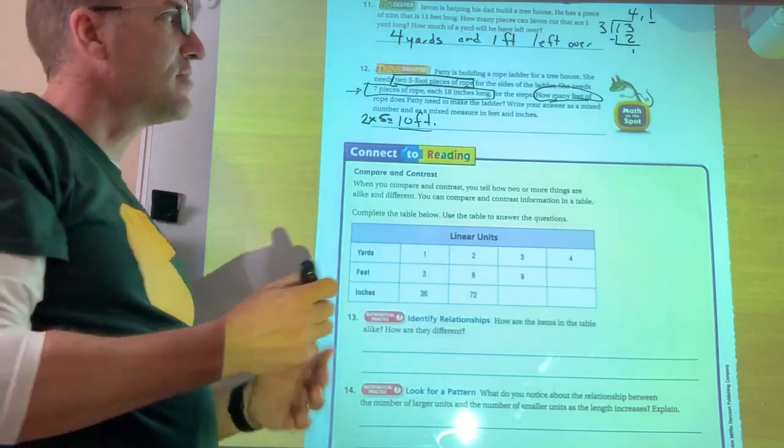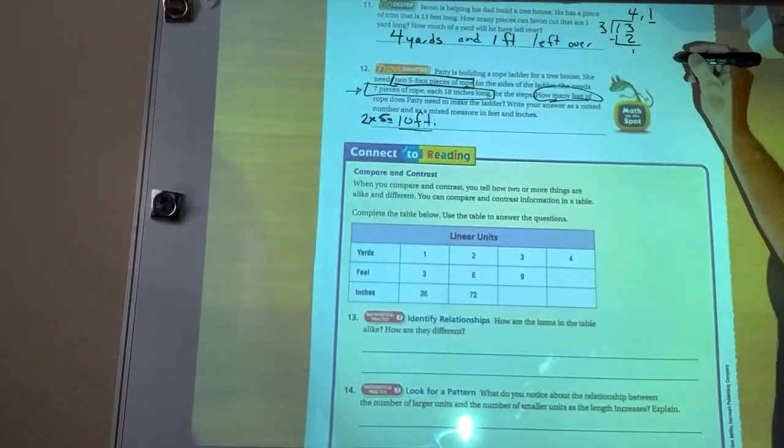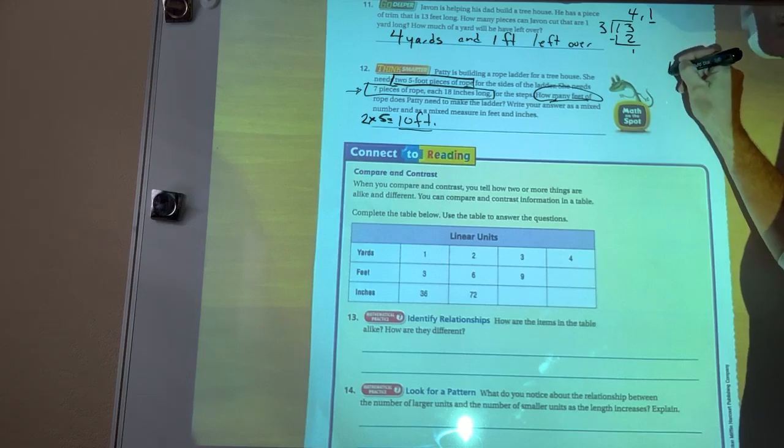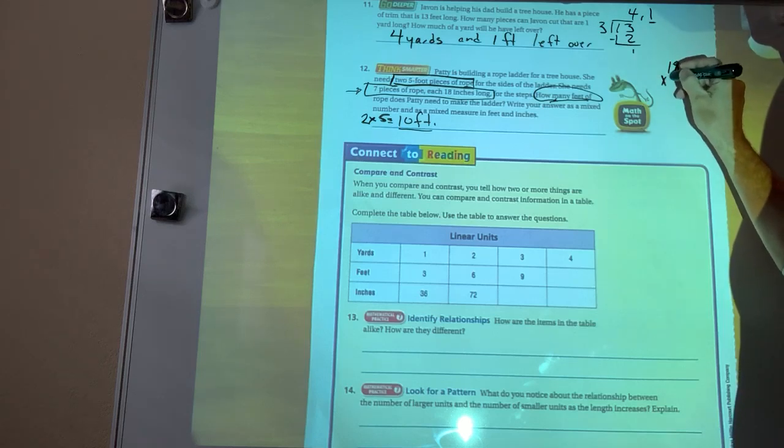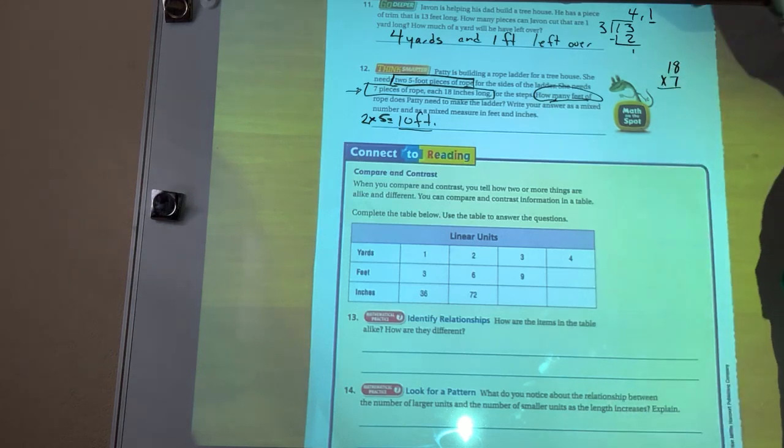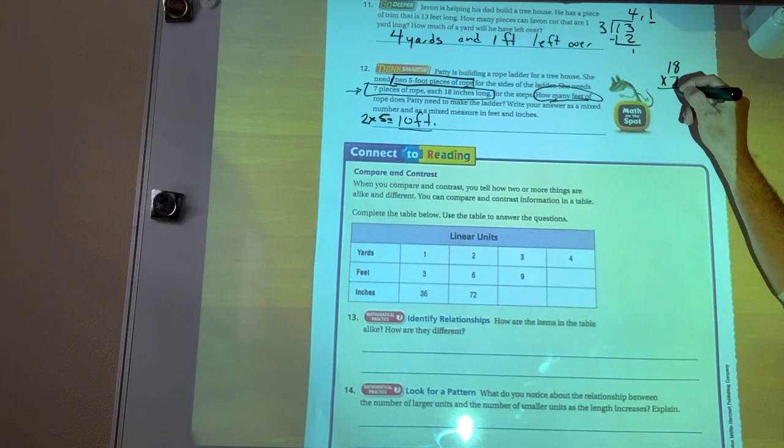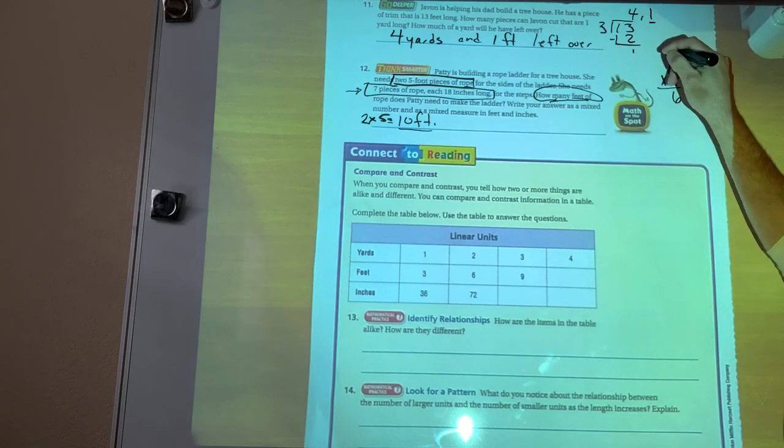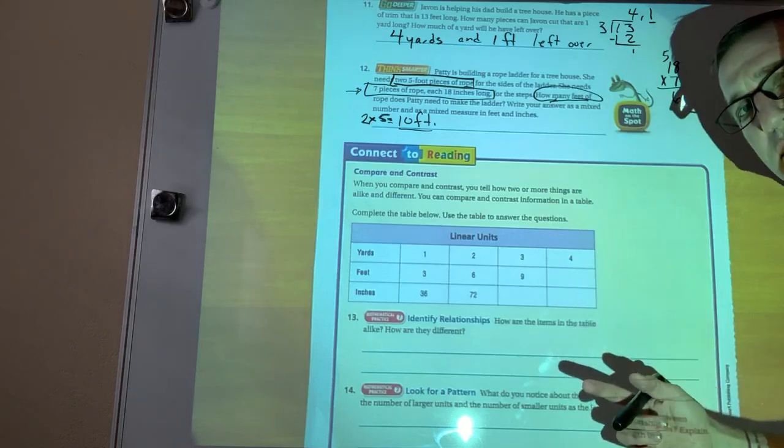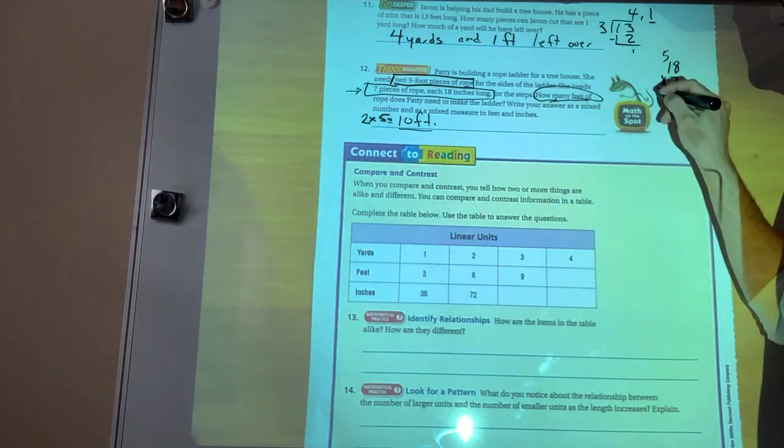I'm going to multiply. So I'm going to go ahead and do that right over here. I'm going to take, I always like to put the large number on top. So I'm going to put 18 times seven. Alright. What's 18 times seven? Well, what's seven times eight? 56. Carry my five. Seven times one is seven, right? Plus the five is 12.